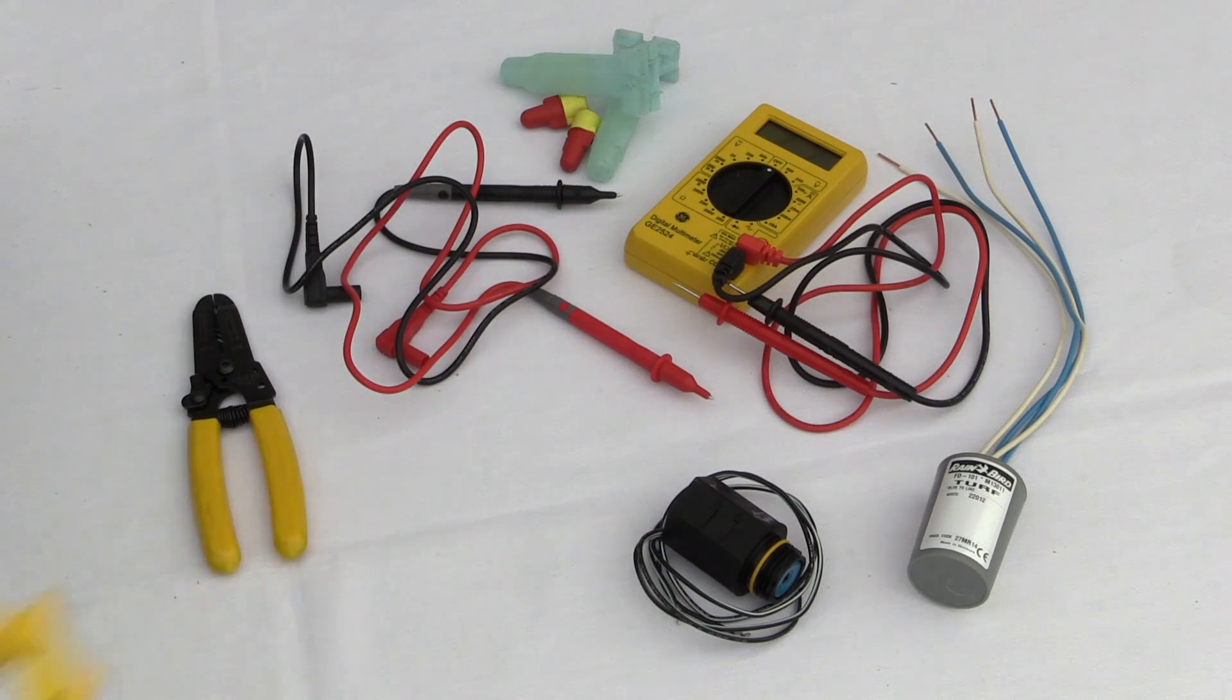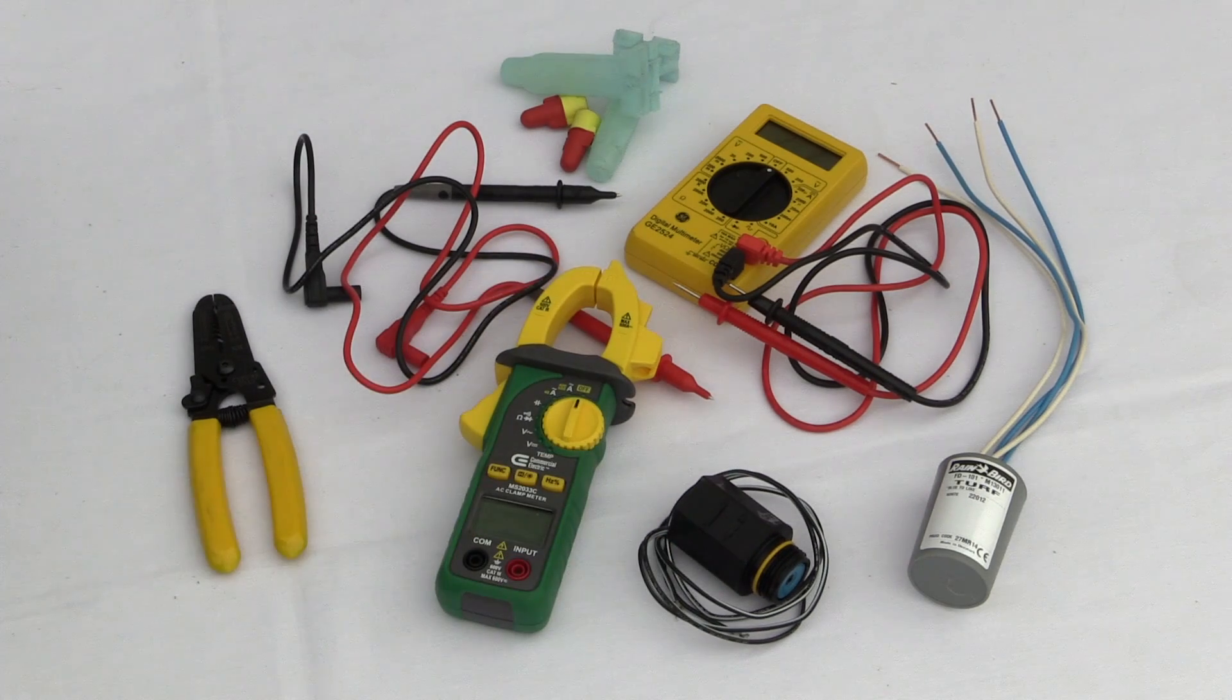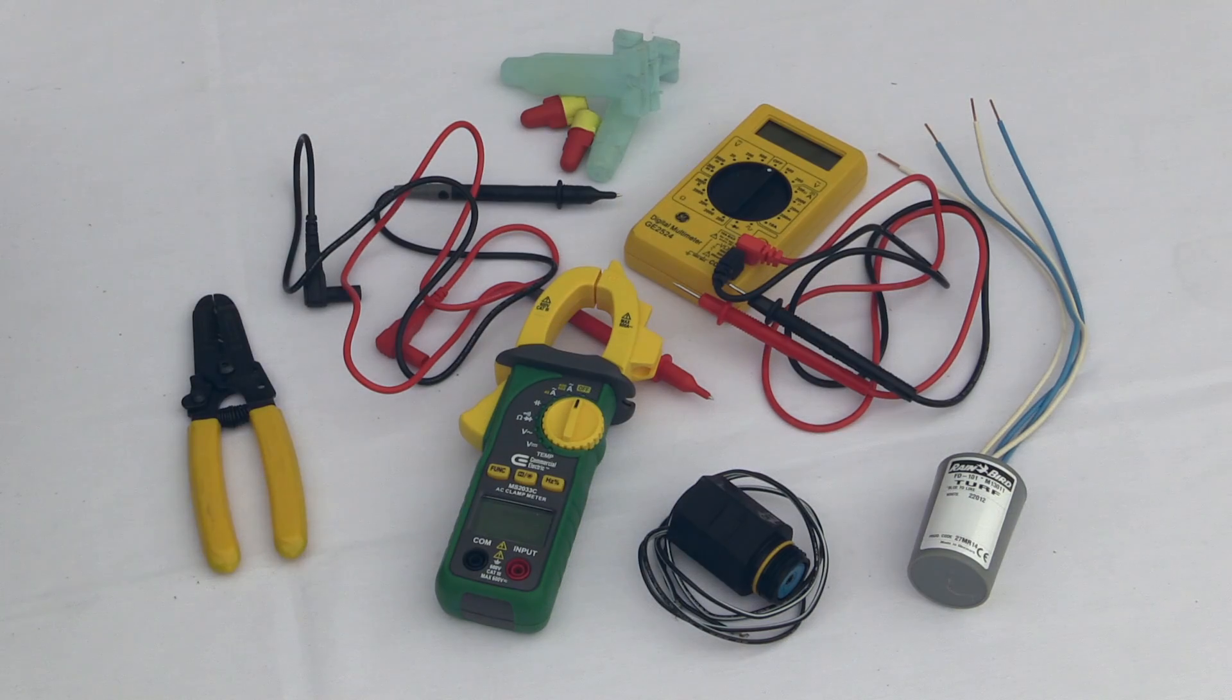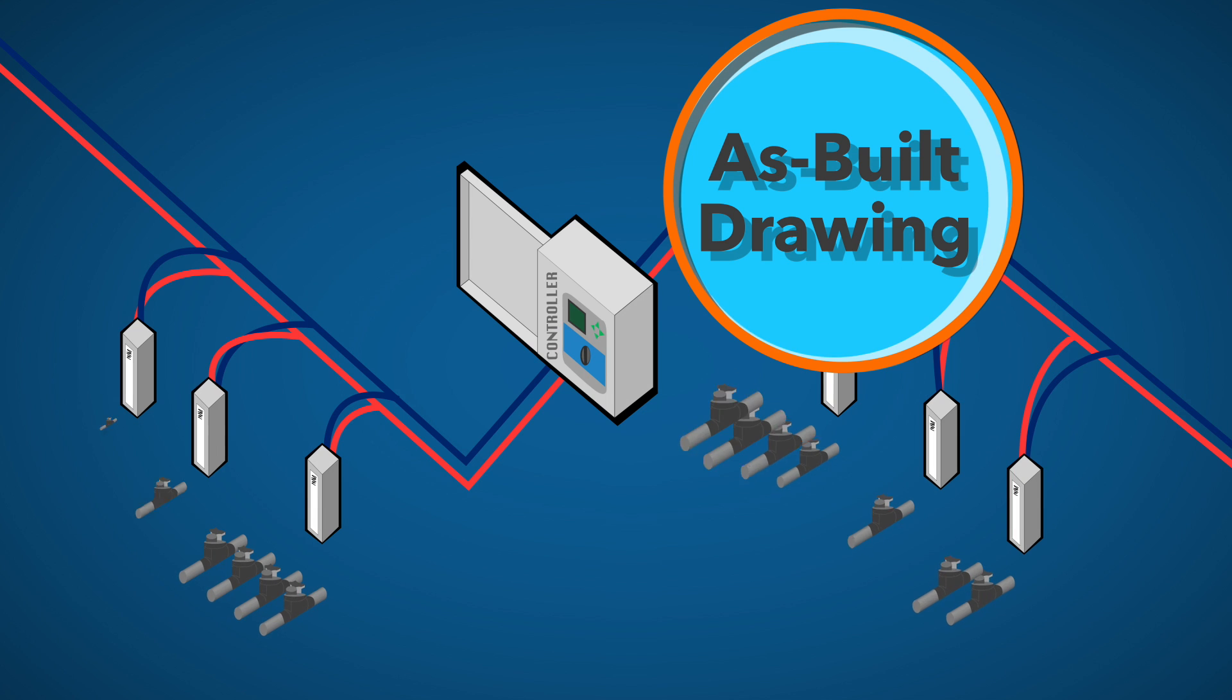Before attempting to troubleshoot an existing decoder installation, you need to have specific system information and materials. Obtain an accurate as-built drawing showing the wire path and decoder locations and the number of decoders on each wire path.